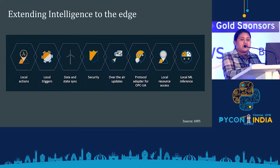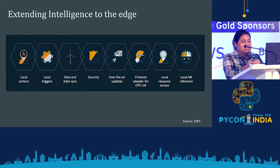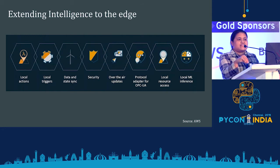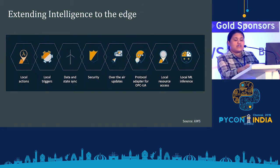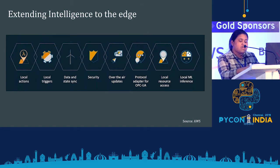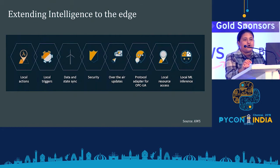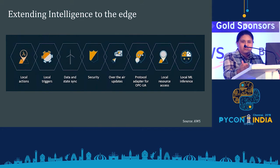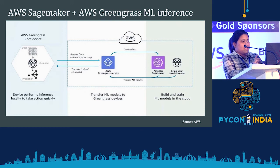AWS Greengrass provides capabilities beyond local actions — your Raspberry Pi device is capable of triggering any kind of functions. Greengrass also lets you use Lambda functions for local actions and triggers. Data and state sync: if there is any update on the cloud model, it gets updated on the edge model through over-the-air updates. It takes care of security since your entire data is not exposed to the network. It supports protocols like MQTT and provides local resource access, giving components access to modules connected to your IoT devices as well as the ML models you're using.